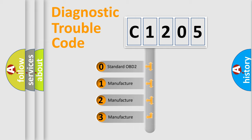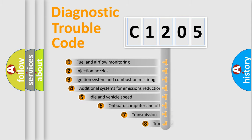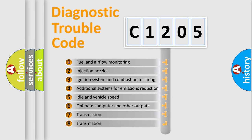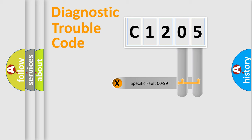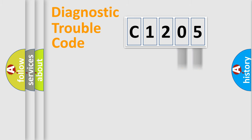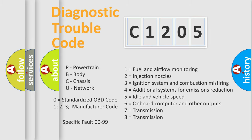If the second character is expressed as zero, it is a standardized error. In the case of numbers 1, 2, or 3, it is a more specific expression of a car-specific error. The third character specifies a subset of errors. This distribution is valid only for the standardized DTC code. Only the last two characters define the specific fault of the group. Such a division is valid only if the second character code is expressed by the number zero.